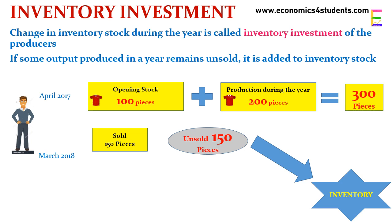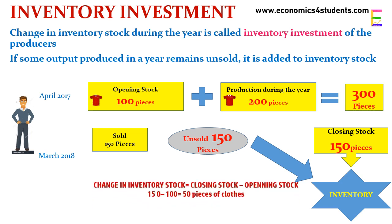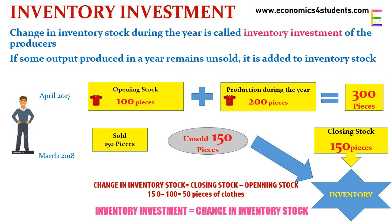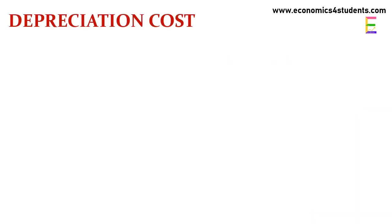At the end of the financial year, that is March 2018, if 150 pieces of clothes are sold, then the remaining 150 pieces will go to inventory stock. So the closing stock will be 150 pieces of clothes. Change in inventory stock during the year is closing stock minus opening stock, here 150 minus 100, that is 50 pieces of clothes. Therefore, inventory investment of the producer is the change in inventory stock in a year.